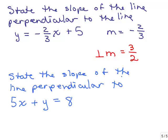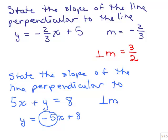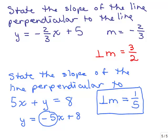You try this one: state the slope of the line perpendicular to the line 5x plus y equals 8. First you're going to have to figure out the slope of this line by solving for y, and so the slope of this line is negative 5. To find the slope of the line perpendicular to that, you change signs — this was negative so it will be positive — and take the reciprocal. The reciprocal of 5 is 1 fifth. So the perpendicular slope is 1 fifth.